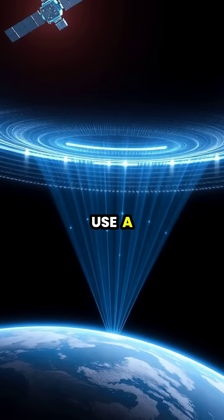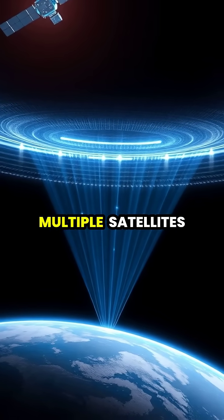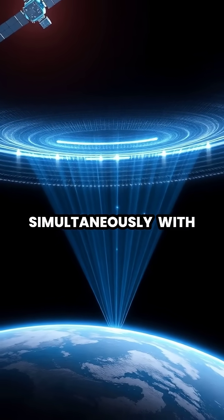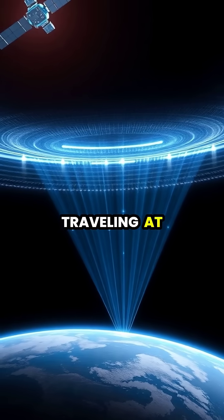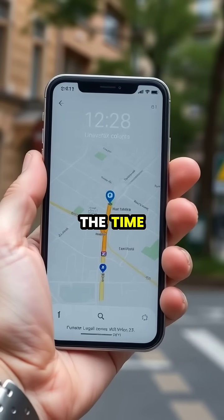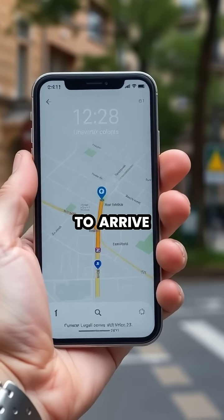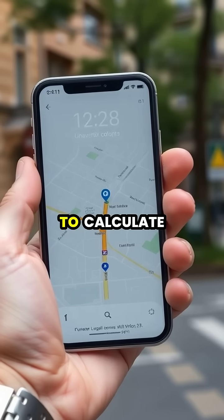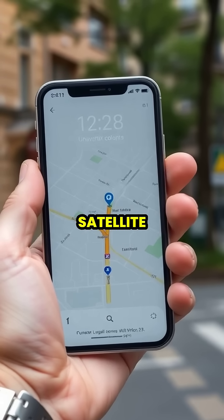When you use a GPS device, it receives signals from multiple satellites simultaneously, with each signal traveling at the speed of light. Your GPS receiver measures the time it takes for each satellite signal to arrive, using these time differences to calculate your distance from each satellite.